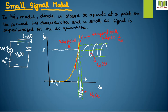In this model, the diode is biased to operate at a point on the forward IV characteristic, and a small AC signal is superimposed on DC quantities. In this figure, there is a diode, an AC signal, and a DC biasing, and the diode current is IDT.